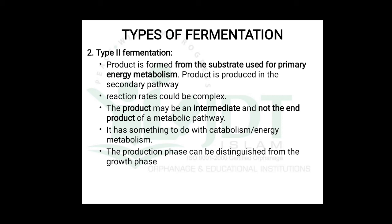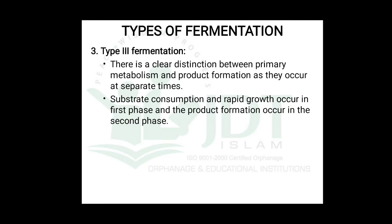In Type 2 fermentation, the product is formed from the substrate used for primary energy metabolism, but the product is produced via a secondary pathway. The reaction rate can be complex, and the product may be an intermediate rather than an end product of the metabolic pathway. It involves both catabolism and energy metabolism, and the production phase can be distinguished from the growth phase.